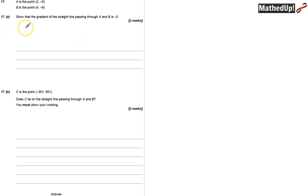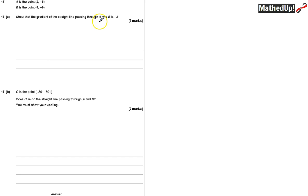Question 17. A is the point (2, -5). B is the point (4, -9). We need to show that the gradient of the straight line passing through A and B is negative 2.